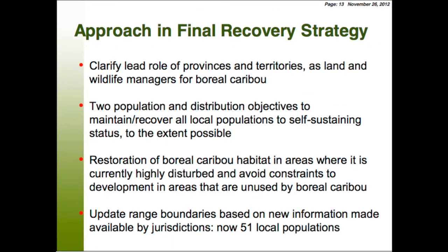In response to all these comments, the new recovery strategy provides more clarification on the lead roles of provinces and territories in managing land and wildlife throughout most of boreal caribou range. We now have two population distribution objectives instead of three — to either maintain or recover all populations to self-sustaining status to the extent possible. We want to restore boreal caribou habitat in highly disturbed areas and avoid constraints to development in areas unused by boreal caribou. We also changed how we define critical habitat, and did an update on range boundaries based on new information from jurisdictions.